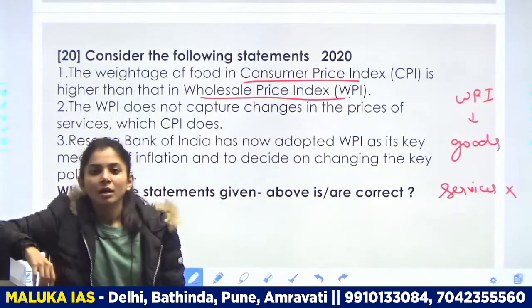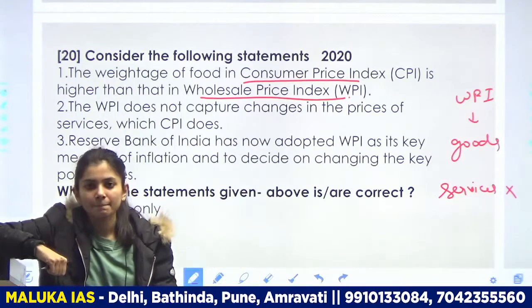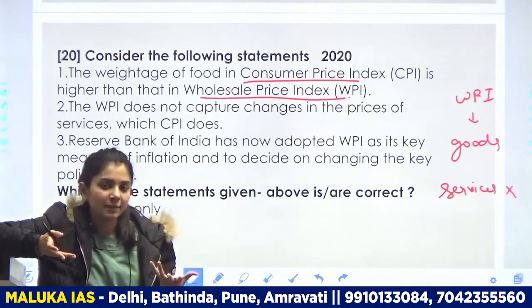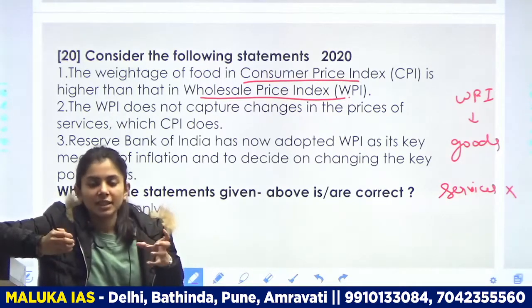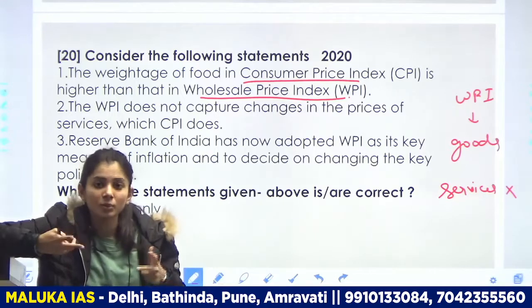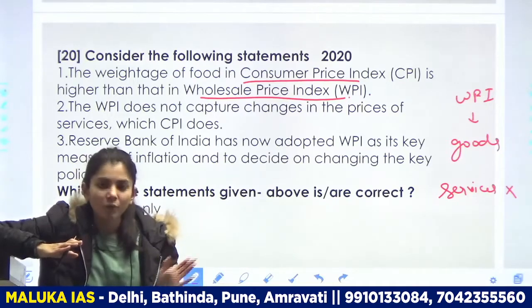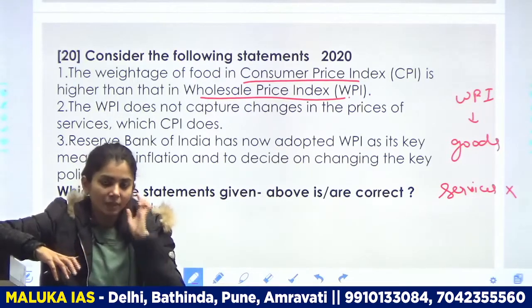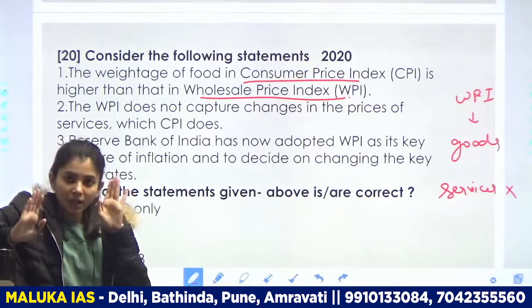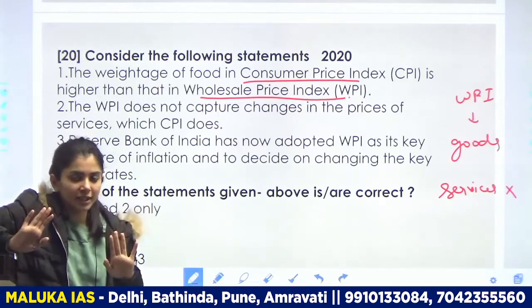First point: WPI mein sirf goods ko include kiya jaata hai — services ko include nahi kiya jaata. Kyun? Goods ko aap wholesale mein purchase kar sakte ho, lekin services ko wholesale mein kaise purchase karoge? For example, main ek teacher hoon — jo teaching kar rahi hoon yeh service hai. Aapko agar mujhse padhna hai, aap ek class le sakte ho, do class le sakte ho — but poori ke poori saare classes ek hi baari mein nahi le paoge. Woh gradual process hogi. Isliye goods wholesale mein ho sakti hain, services nahi. Iss logic ke saath yaad rakhna ki WPI mein services include nahi hoti.